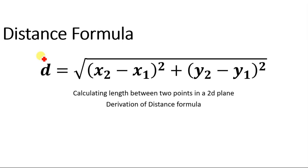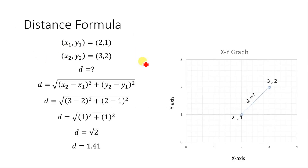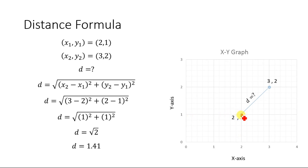Now let's consider these two points in an XY plane. The first point is represented by (2, 1), where 2 is the x-axis component and 1 is the y-axis component of this point.